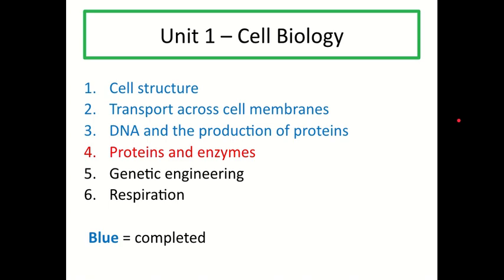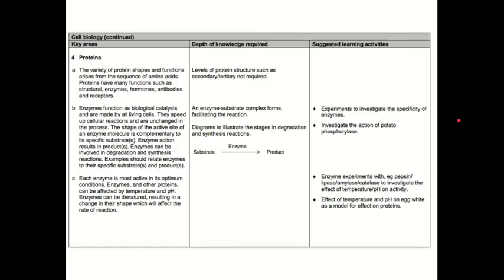You should have already covered Key Areas 1 to 3, and if not, please go back and watch those lessons again before moving on. I highly recommend looking at the National Biology course specification or mandatory knowledge document. The first two columns detail everything that you could be asked in the tests or exams at this level, so it's important to come back to this and make sure you understand everything prior to those assessments.